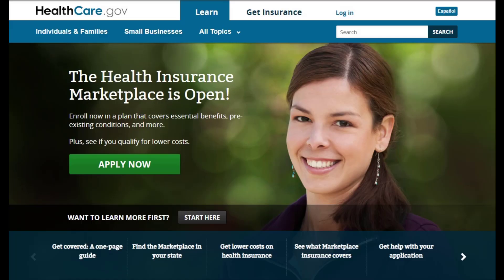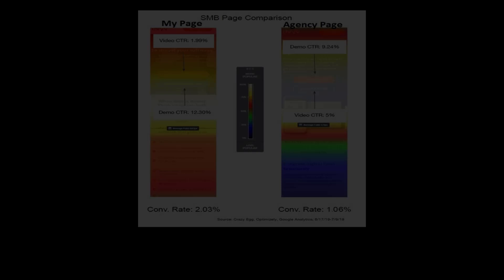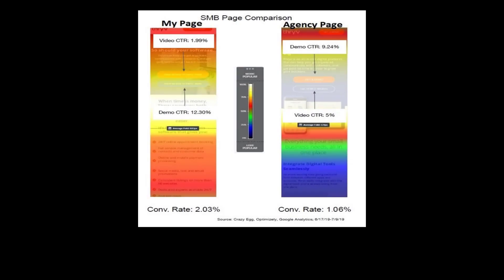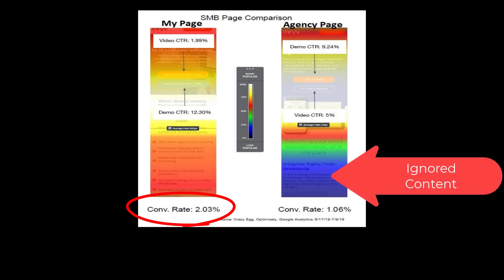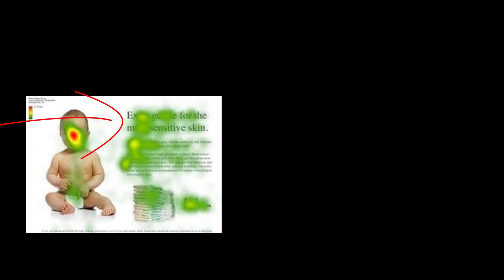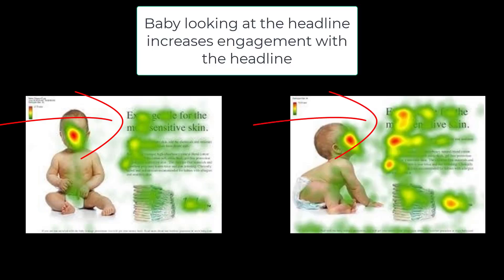Even the images you use will either help you grow your online customer base or repel them. We can easily see this with heat maps and how people look at your marketing material. Images can lead people to read more of your content or ignore it and bounce. Common wisdom is to have a smiling woman looking at your potential customer — basically looking back at them on the page. In testing, this actually pulls eyes away from the marketing message and lowers the conversion rate. But having that same model look at your headline or key marketing concepts actually increases conversions.